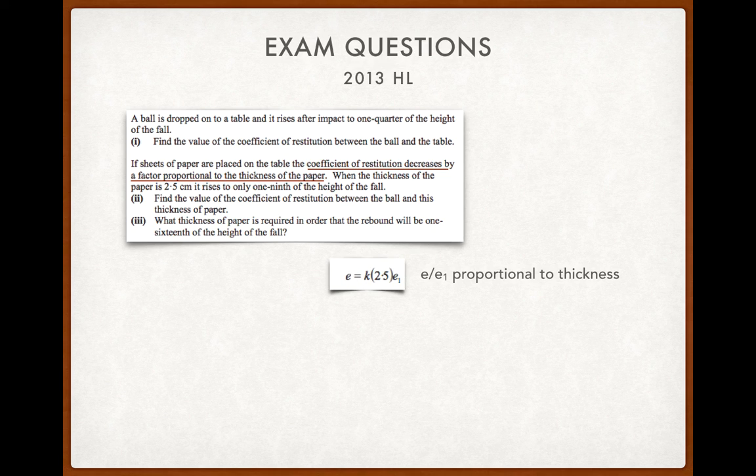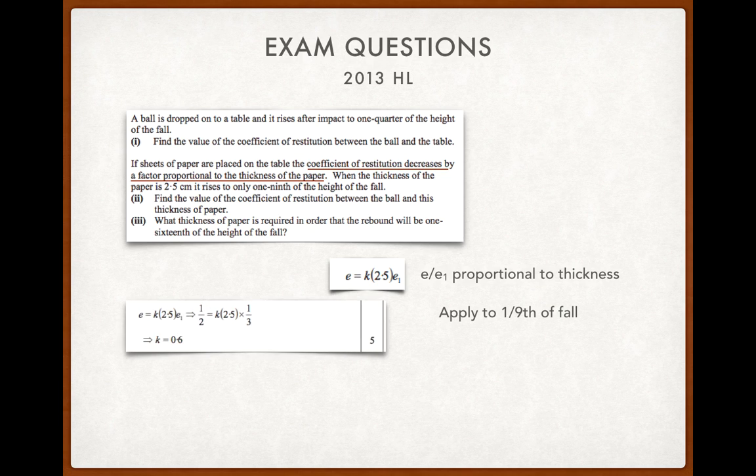So, that means to go from a proportionality to an equal to, or an equation, we need a constant of proportionality, which is k. Now, you can see there I've cross-multiplied by the e1, so I would have had e over e1 is equal to k times 2.5 cross-multiplied to give me that. I know what the e and the e1 are, so I'm applying that to the first part, which is a quarter of the height of the fall, and the one-ninth of the fall. And if I do that, it gives me a constant of proportionality.